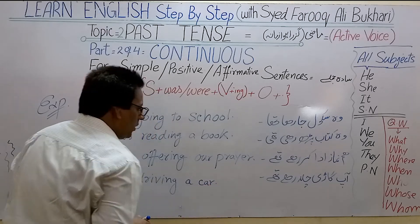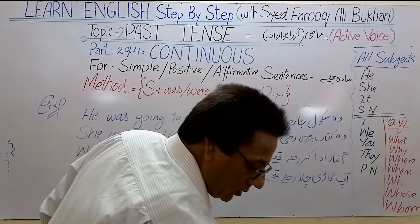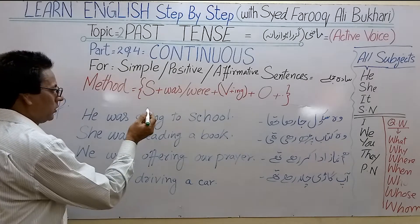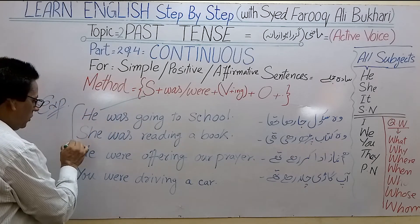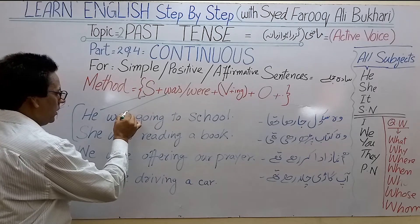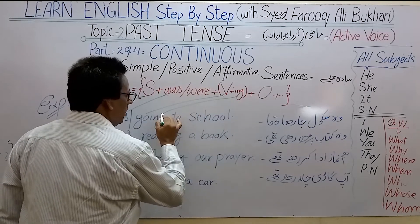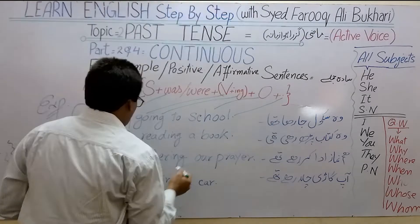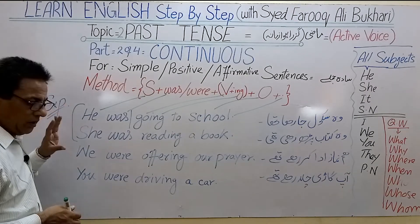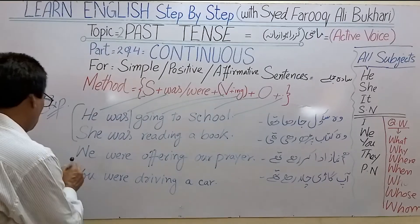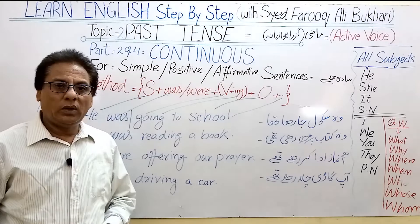So these are continuous simple sentences. Jisme ke sab se pehle hum dekhte hain ke formula ke method ke mutabiq subject — yaani kaam karne wala — uske baad single noun hone par 'was' ka istemal kiya gaya, aur plural noun ke liye 'were' use hota hai. Verb ki first form ke saath I-N-G ka izafa, uske baad object aur full stop. So see you in the next video, inshallah.